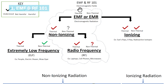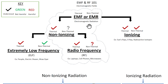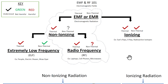Electromagnetic fields, or EMF, are produced by any electronic charge. These fields are both electric and magnetic and travel at the speed of light, and this creates electromagnetic radiation, or EMR. In general, electromagnetic radiation has two types: ionizing and non-ionizing. And in general, there are two types of effects associated with them: thermal and non-thermal.